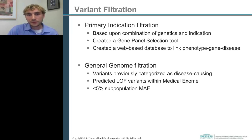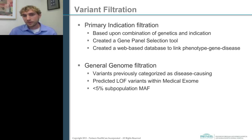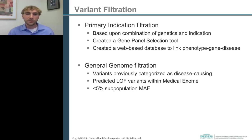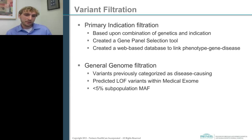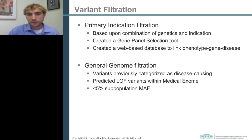For our general genome filtration — our expanded incidental findings report — we're looking for variants previously characterized as disease-causing in available databases, predicted loss of function variants within the medical exome. Because we're doing this in the Mendelian context, we're looking at variants with less than 5% subpopulation minor allele frequency to limit the scope of things we actually do manual assessment on. This is broadly how we're thinking about the filtration process.